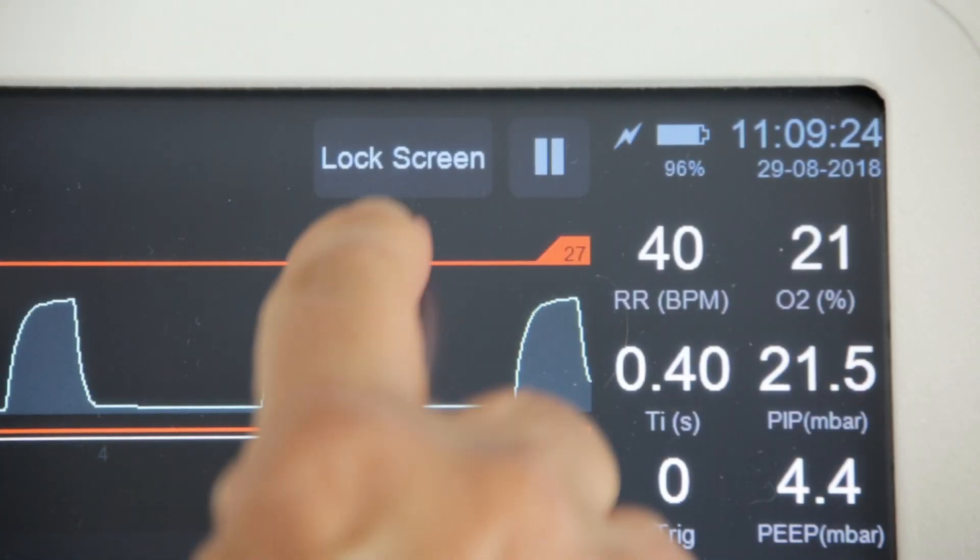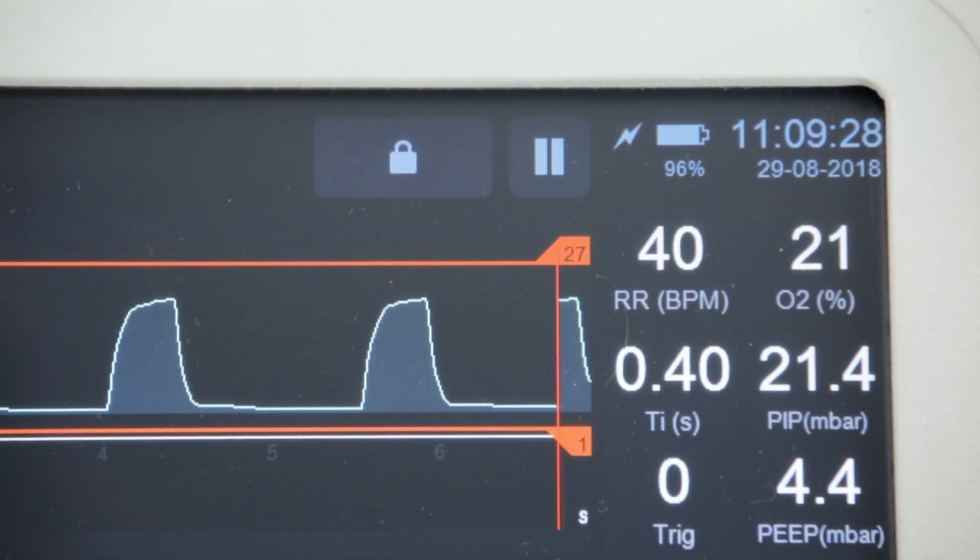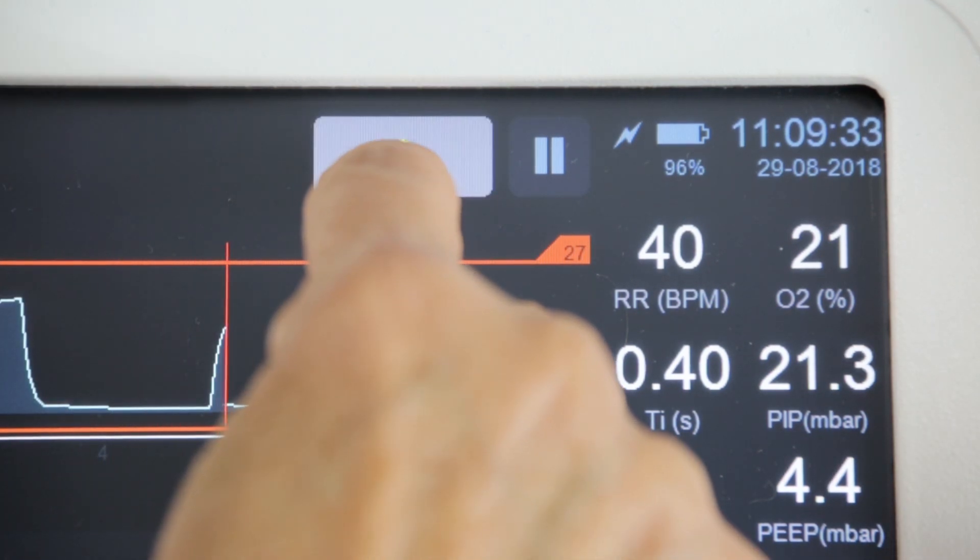Lock screen button: Pressing this button locks the screen. To unlock, press it and hold for one second. In the event of an alarm, the screen will automatically unlock.